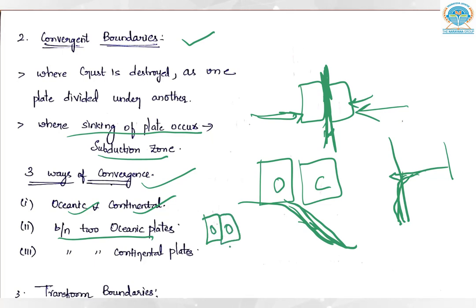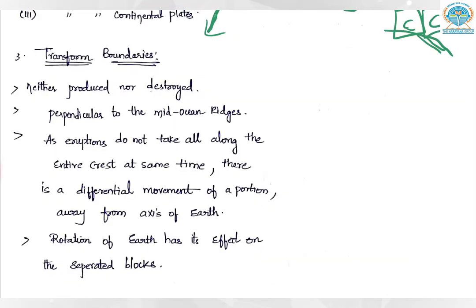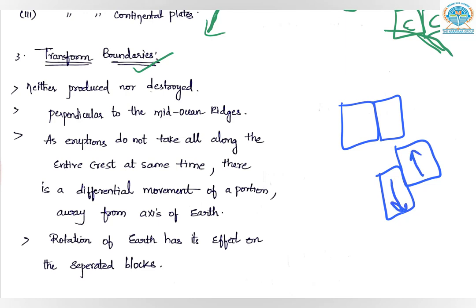Convergence can also happen between two oceanic plates — whichever is heavier gets subsumed first — or between two continental plates, where again the heavier one gets subsumed. At a transform boundary, two landmasses — either oceanic-oceanic or continental-continental — slide past each other, forming a transform fault. Nothing is created and nothing is destroyed; they just slide past each other.